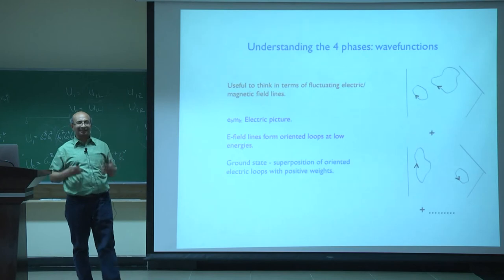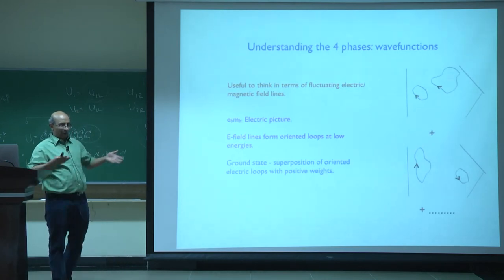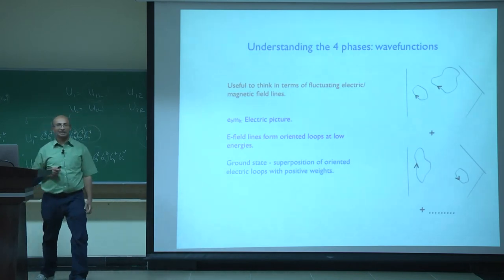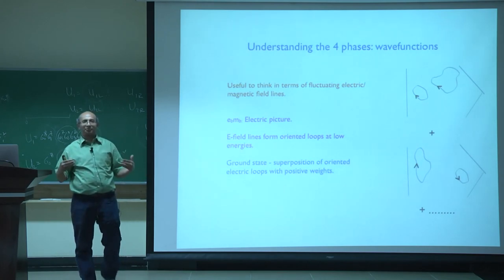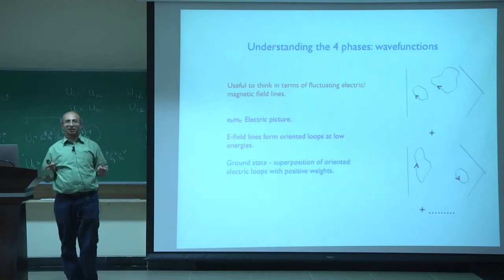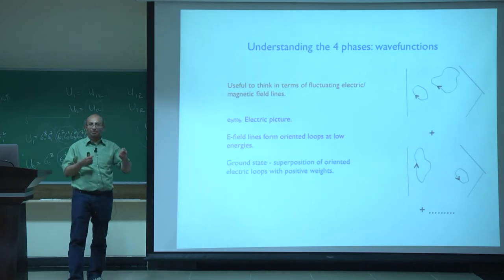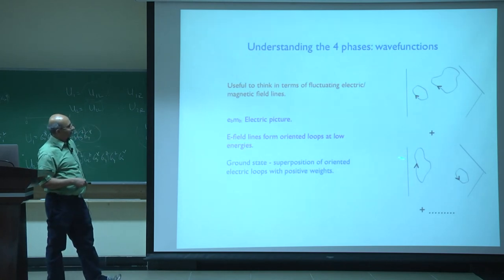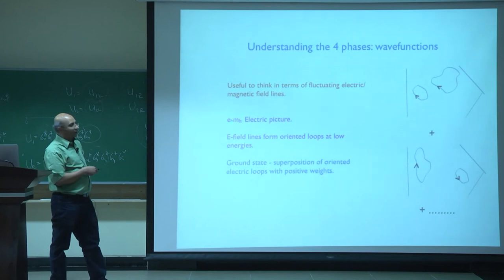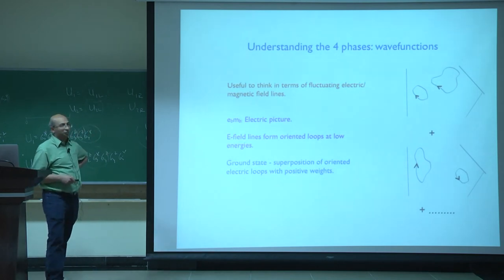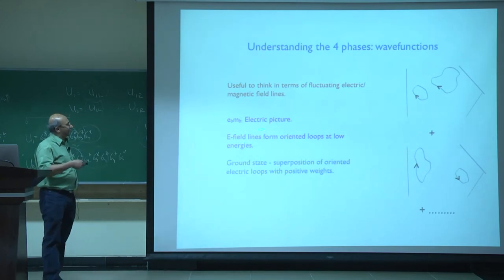Let's try to understand these four phases from the point of view of wave functions, thinking in terms of fluctuating electric or magnetic field lines. Below the electric and magnetic gaps, the field lines form closed loops, and the wave function can be represented in the electric or magnetic basis as a superposition of oriented loops. In the simplest phase, EBMB — constructed in all existing microscopic models — the ground state is a superposition of oriented electric loops with positive definite weights.